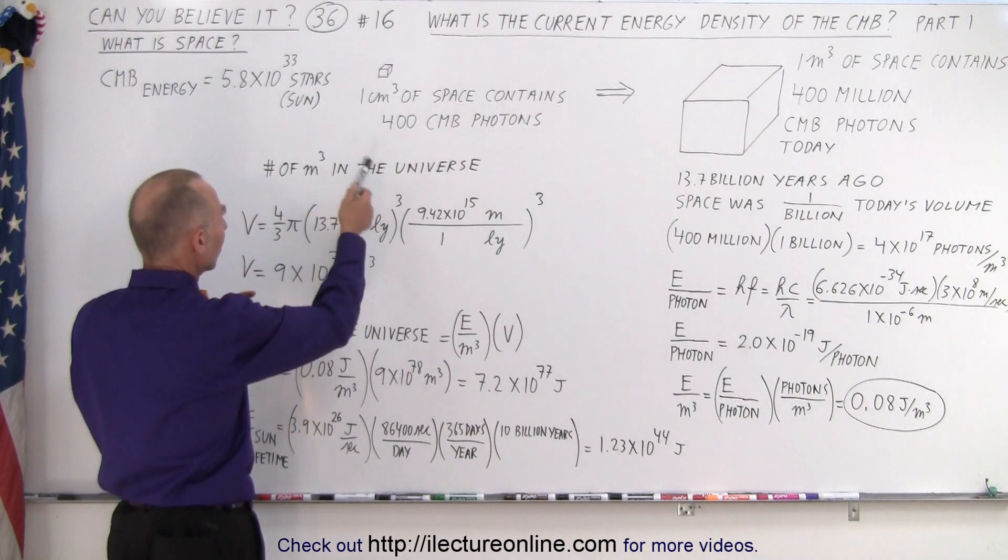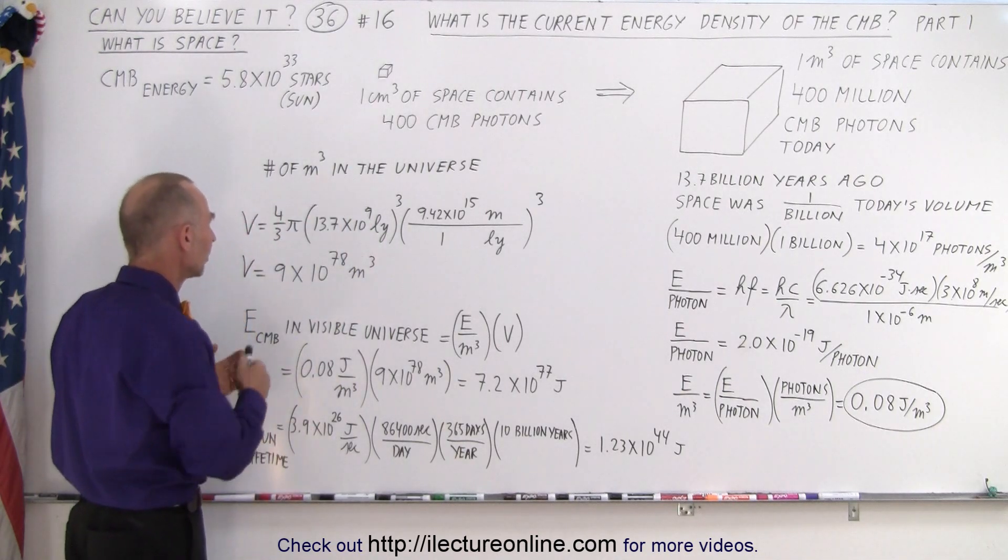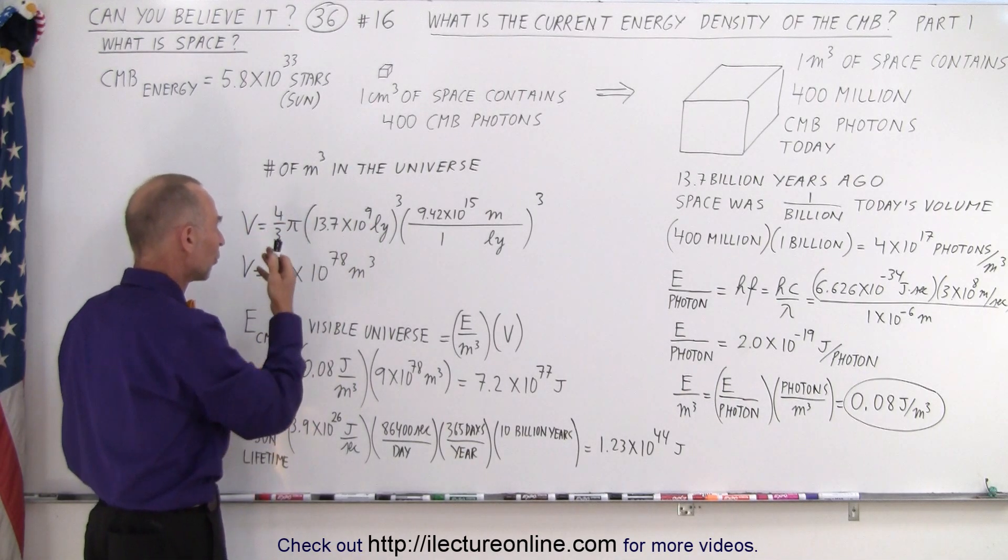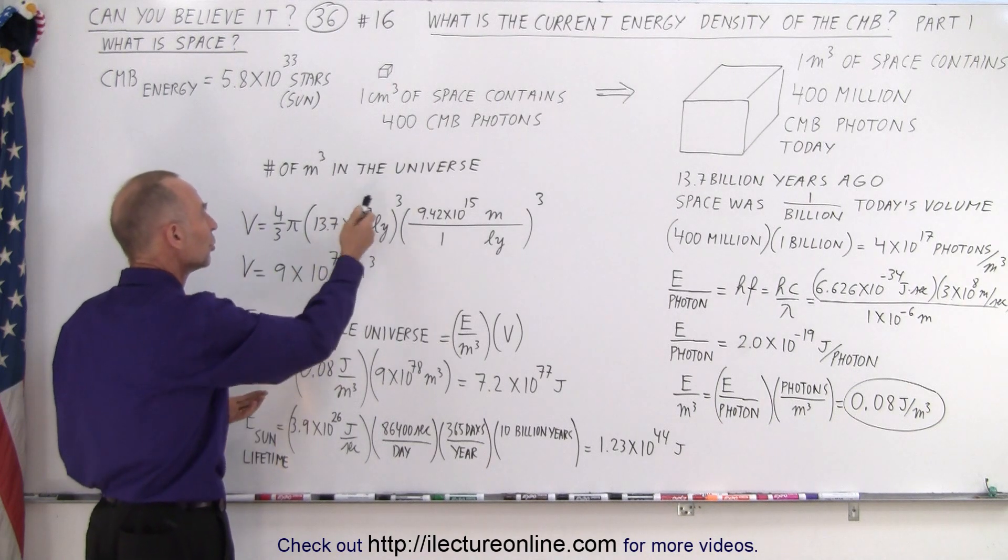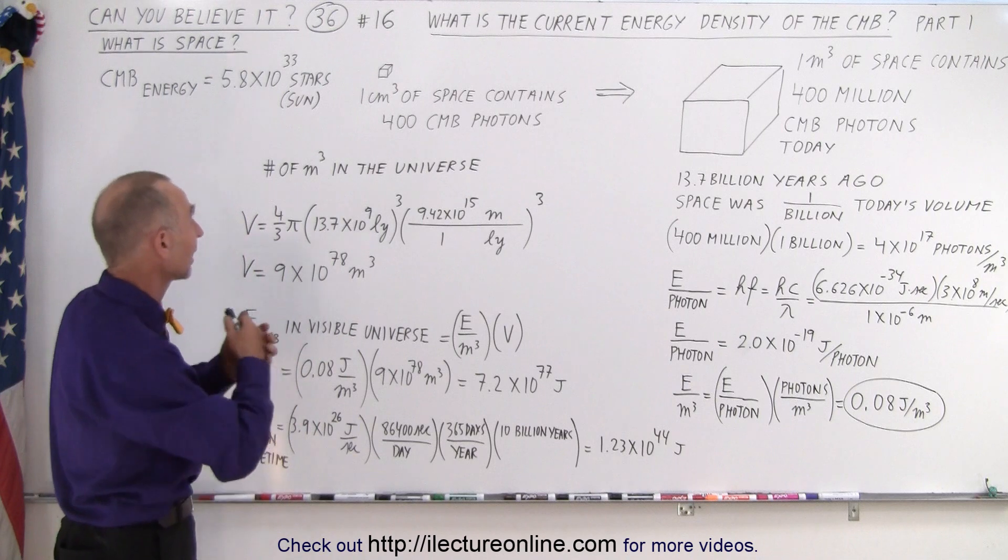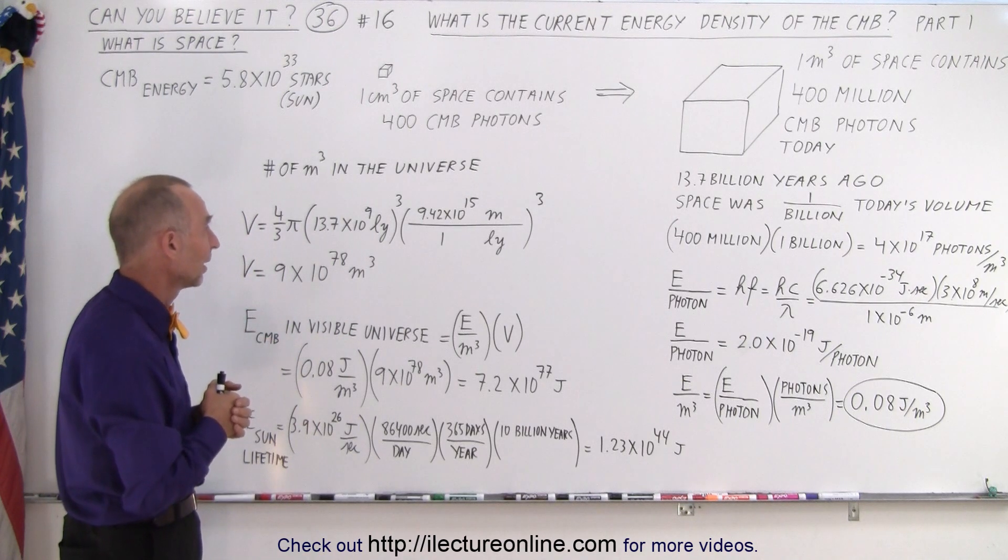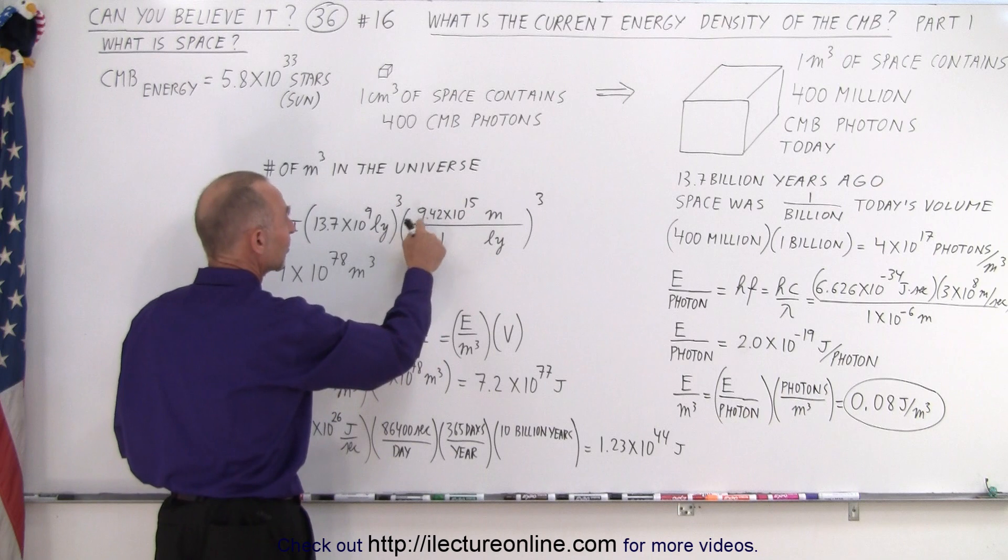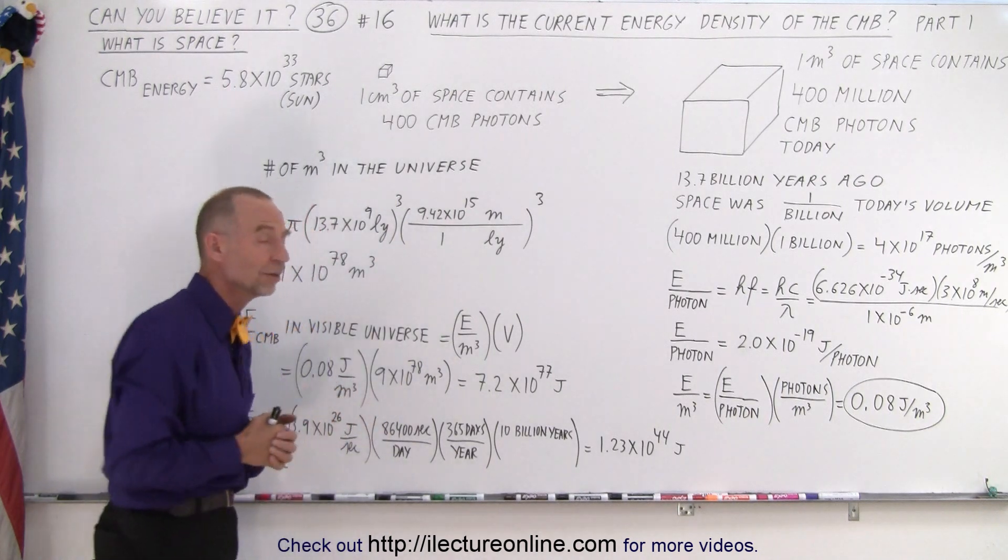So, how many cubic meters are there in the visible universe? Well, the volume of a sphere is 4 thirds pi times R cubed, and R, the radius, is 13.7 billion light years, 10 to the 9 light years. Of course, we want to convert that to meters, and the light year is 9.42 times 10 to the 15 meters.